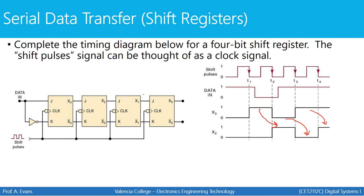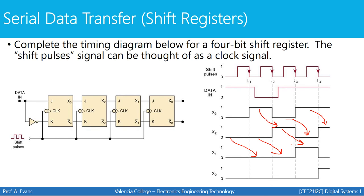This is a shift right register — you can also have a shift left register where data travels in the opposite direction. X1 follows the same pattern: the zero stored in X2 shifts forward with each clock transition, then the next value shifts forward, and so forth. X0 follows the same pattern. That's how a shift register works, and that's what a waveform looks like for a shift register, where data shifts to the right with each clock pulse.